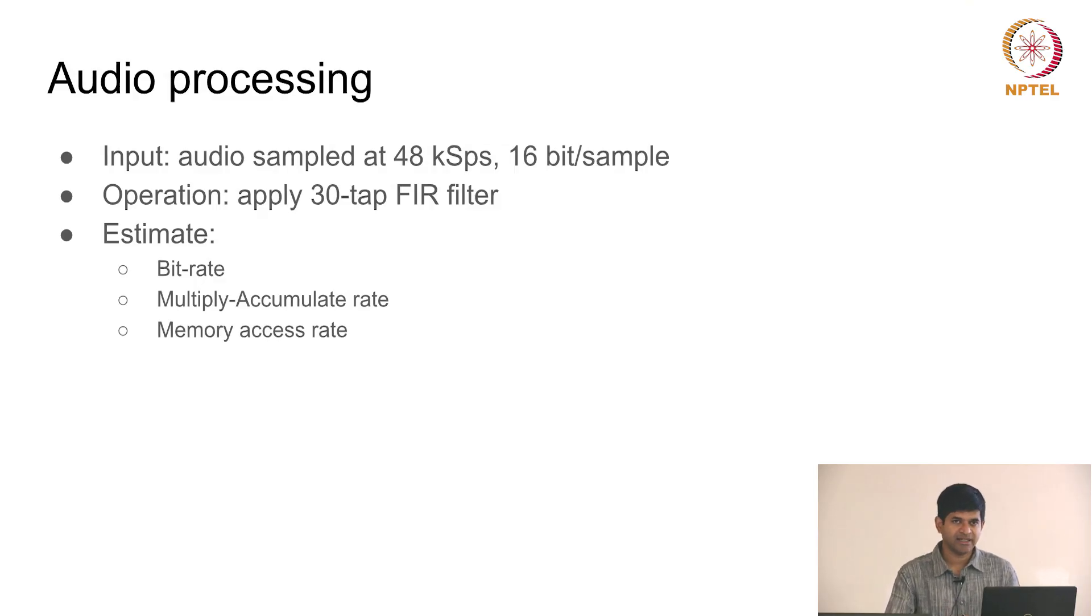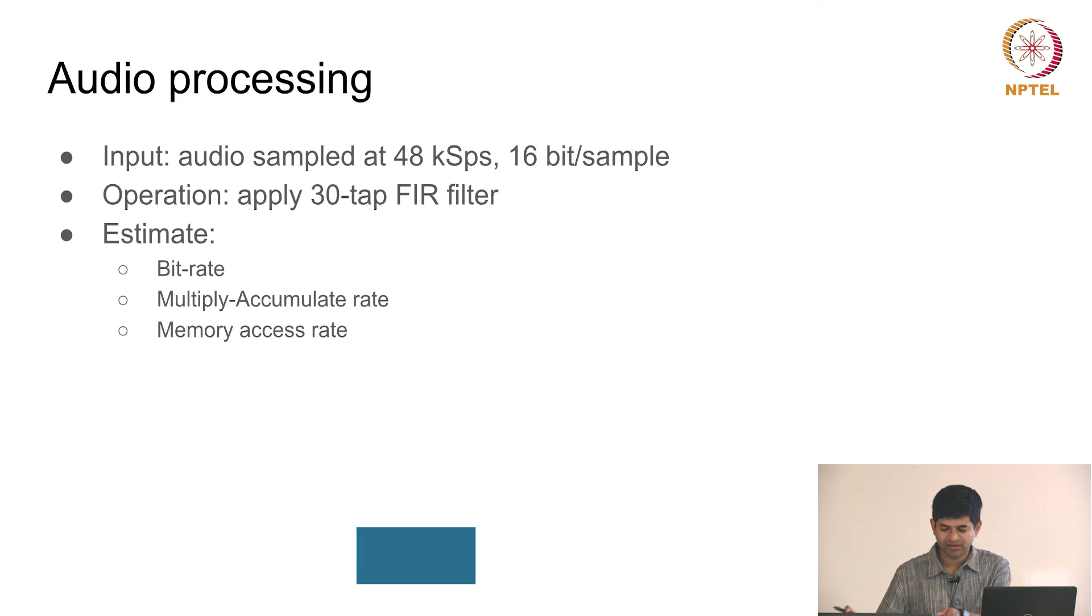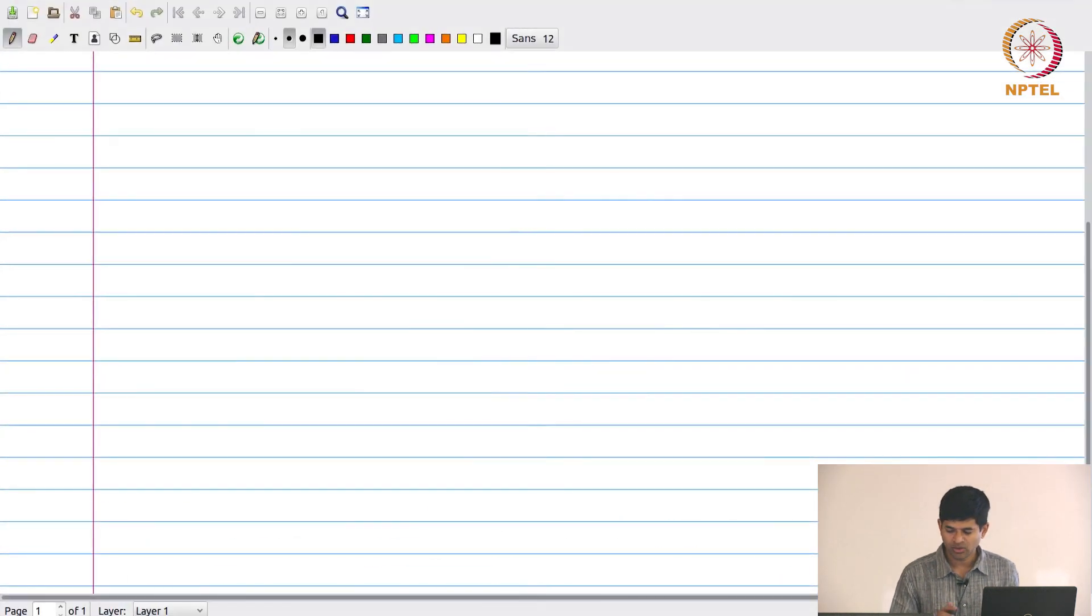So, let us look at a couple of examples and see if we can dive a bit deeper into them. One is audio processing. I'm going to consider input audio that's been sampled at 48 kilosamples per second, and this is basically 16-bit data. The operation we're trying to do is filter it, and I'm assuming it's a 30-tap filter.